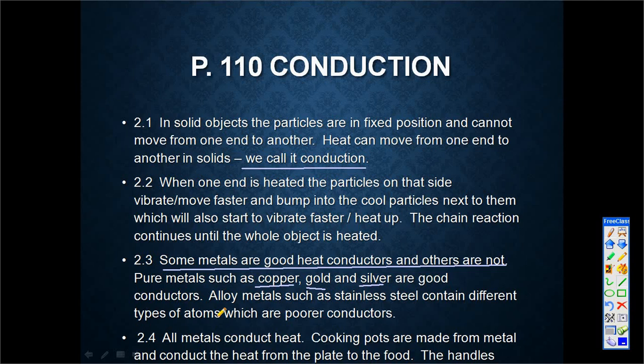And then we also get alloys. Alloy metal is a combination of different materials that match together. We call it alloy metals. For example, stainless steel is a combination of iron, of carbon, and also of chrome that are put together.